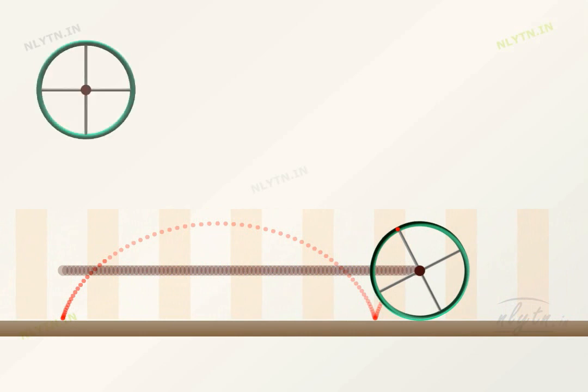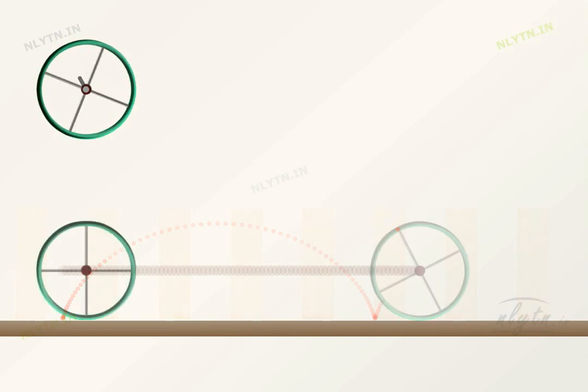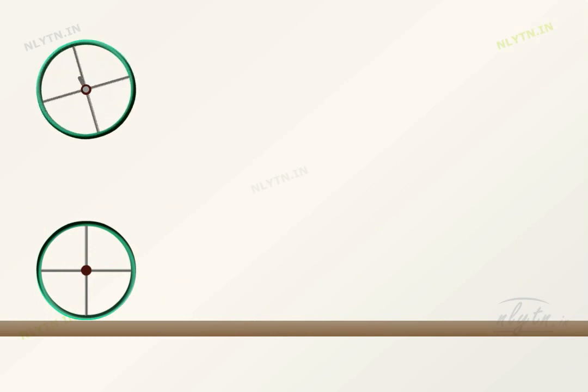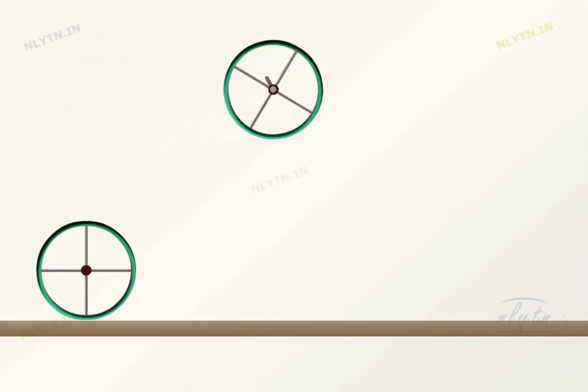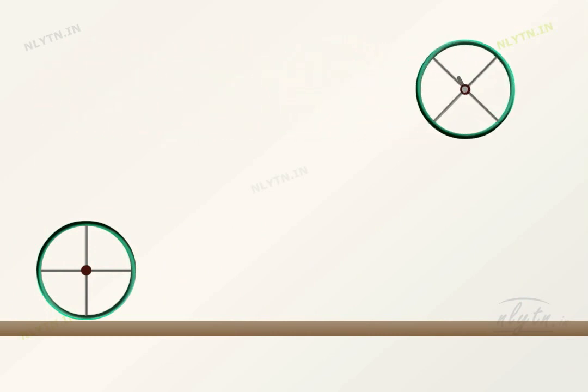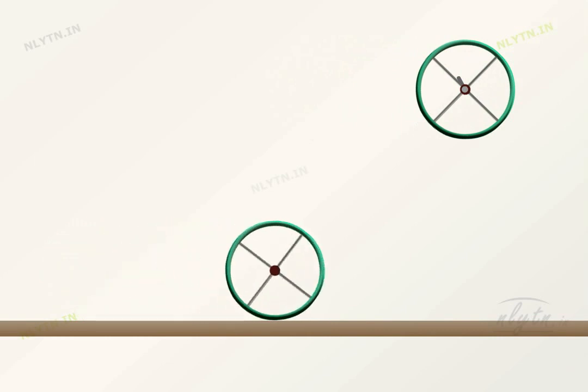Let us attach a ring to a movable rod at its center of mass and then give it a rotational motion. Now, if we move the rod like this, the motion of the ring is similar to the ring rolling on the ground.